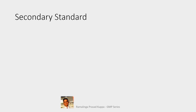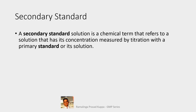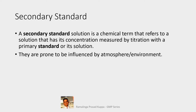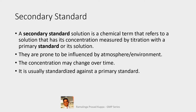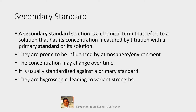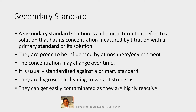Let us see what a secondary standard is. A secondary standard solution is a chemical term referring to a solution whose concentration is measured by titration with a primary standard or its solution. Secondary standards are prone to being influenced by atmosphere and environment, and their concentration may change over time. They are usually standardized against a primary standard. They are hygroscopic, leading to variable strengths, and can get easily contaminated as they are highly reactive.